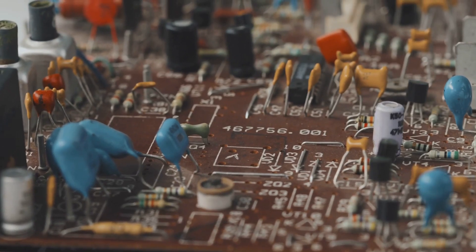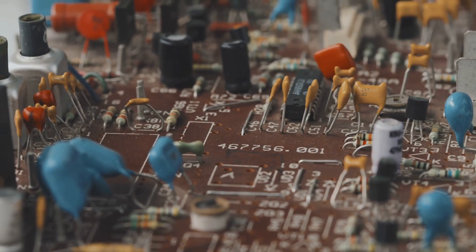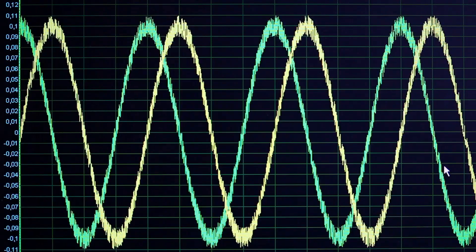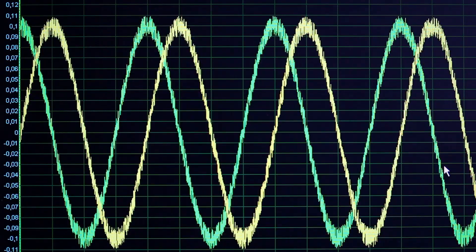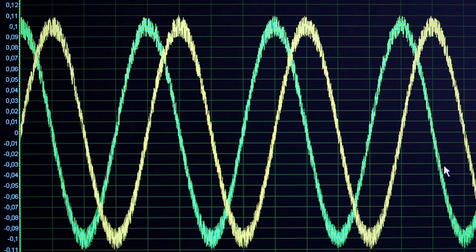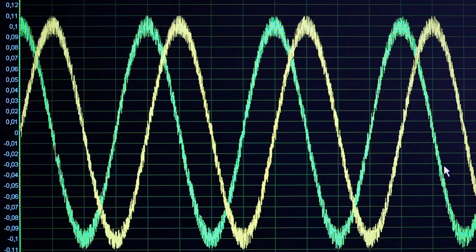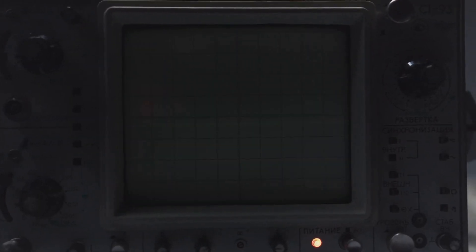A rectifier diode allows current to flow through it in only one direction. When alternating current voltage is applied across the diode, it only conducts current during the positive half cycle of the alternating current waveform. During the negative half cycle, the diode blocks the current.